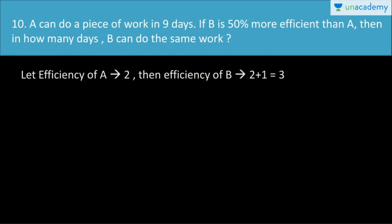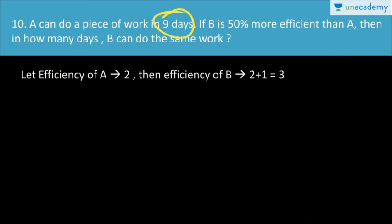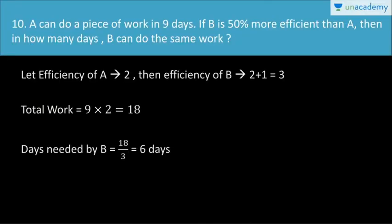B's efficiency is 50% more than A. So 50% increase means 1 plus 1 gives 2, plus 1 more gives B efficiency of 3. A efficiency is 2 and the total work is based on 9 days.